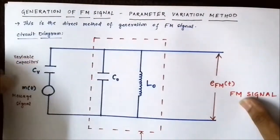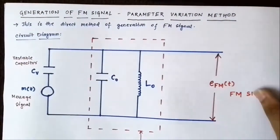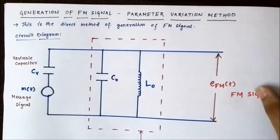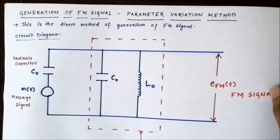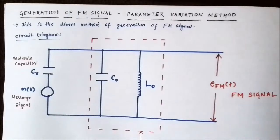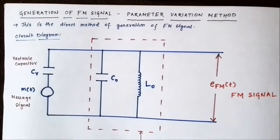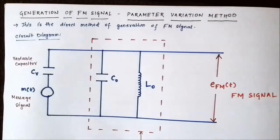Hello friends, welcome to Engineering Tutorial. In my previous video I discussed the methods of generation of a frequency modulated signal waveform, and I discussed the Armstrong method of generation of an FM signal. In today's video I'll be discussing the second method of generation of FM signal, which is the parameter variation method. Let's get started. The Armstrong method is the indirect method of generation of FM signal.